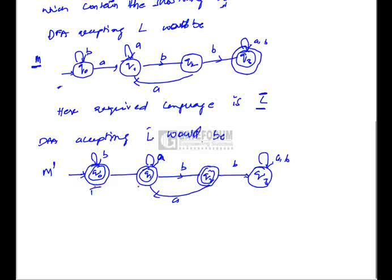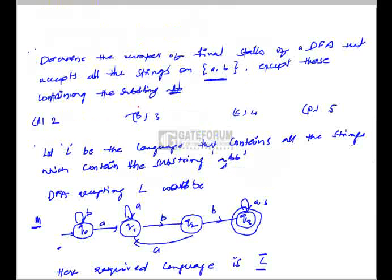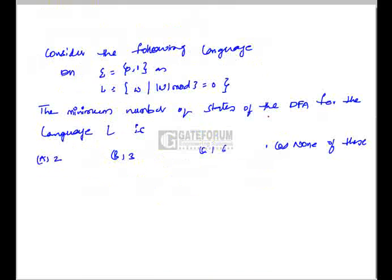Hence the number of final states in the DFA is 1, 2, and 3, which is option B. Next, we have to find the number of states of the DFA for language L, which contains strings whose length is divisible by 3 over the alphabet {0, 1}.